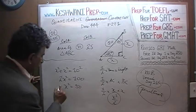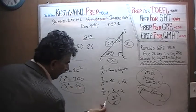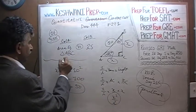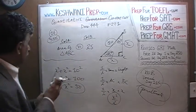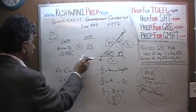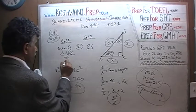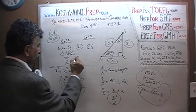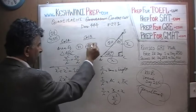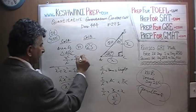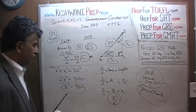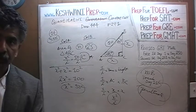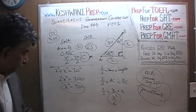We're done. We found that the area of the triangle is X squared over 2, and we just found that X squared is 50, so the area is 50 over 2, which equals 25. The answer is C. That's all. I'll see you tomorrow. Bye now.